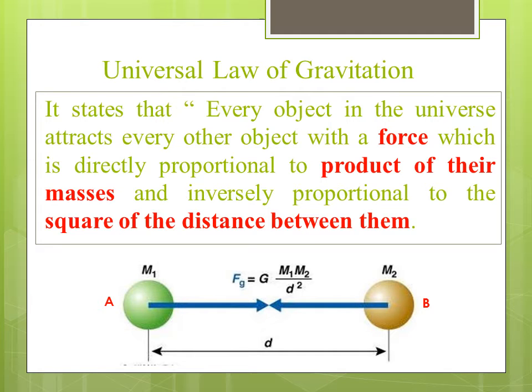Universal law of gravitation states that every object in the universe attracts every other object with a force which is directly proportional to product of their masses and inversely proportional to the square of the distance between them.